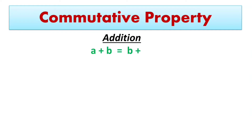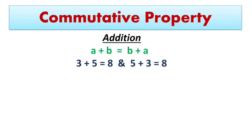The first one is commutative property. Commutative property is true for addition and multiplication. When two numbers are added, the sum is the same regardless of the order in which the numbers are added. A plus B equals B plus A. For example, 3 plus 5 equals 8 and 5 plus 3 equals 8.